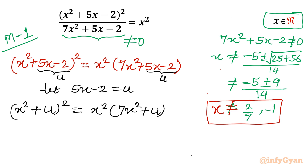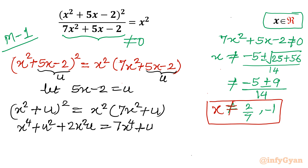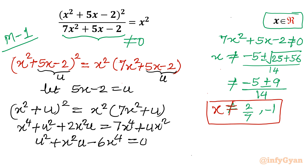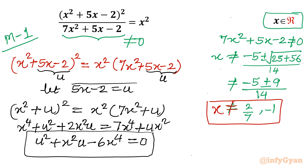Expanding using the algebraic identity, the left side gives x⁴ + u² + 2x²u. The right side gives 7x⁴ + ux². Taking all terms to one side, rearranging gives u² + x²u - 6x⁴ = 0. This is now a quadratic in u. Remember our substitution: u = 5x - 2, which we will substitute back once we solve.